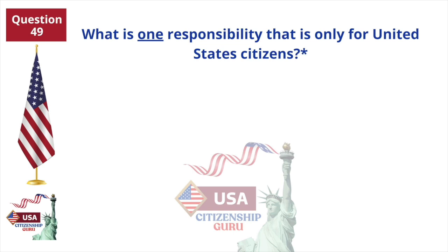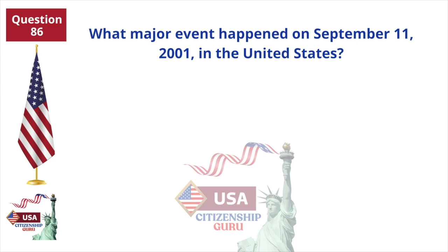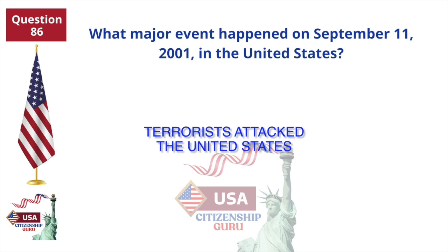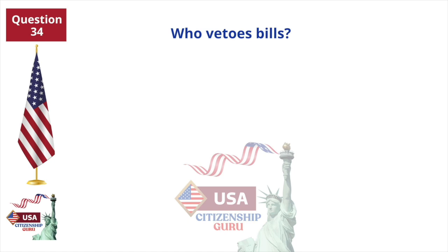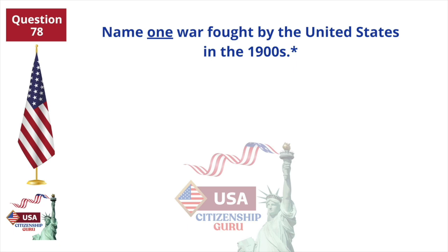What is one responsibility that is only for United States citizens? Serve on a jury. What major event happened on September 11, 2001 in the United States? Terrorists attacked the United States. Who vetoes bills? The President. Name one war fought by the United States in the 1900s. World War I.